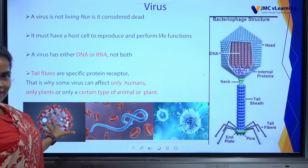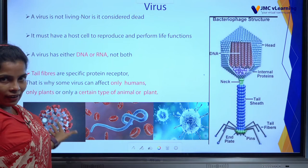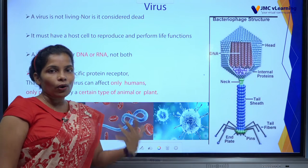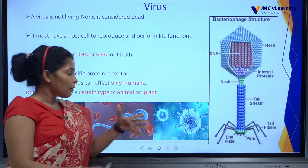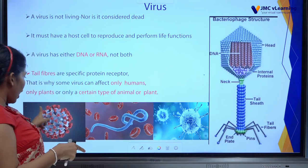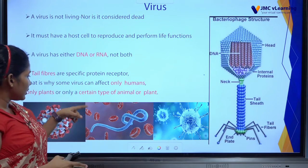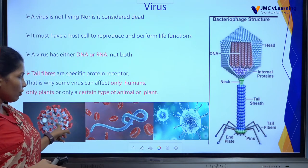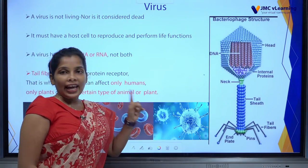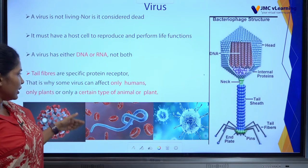That is why some viruses can affect only humans, only plants, or only certain types of animals or plants. This famous virus is the coronavirus — we call it corona because this virus has a crown. This is the Ebola virus, different from coronavirus. And this is the AIDS virus. Those are the famous viruses discussed today.